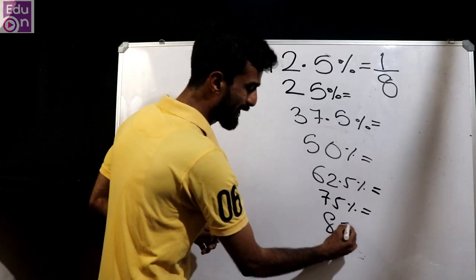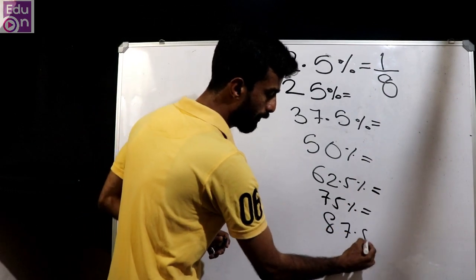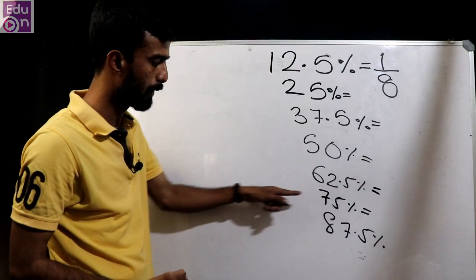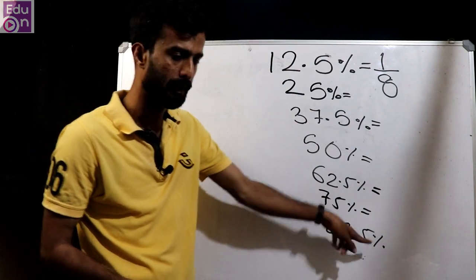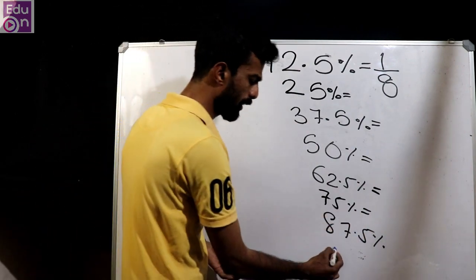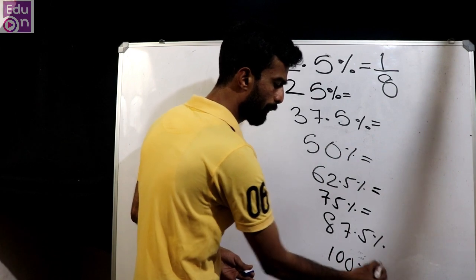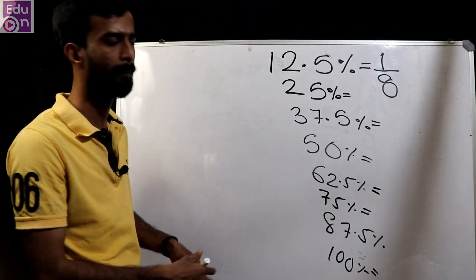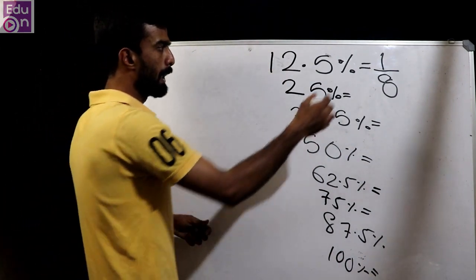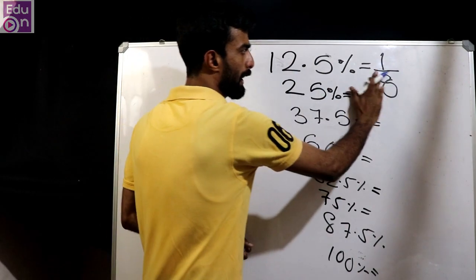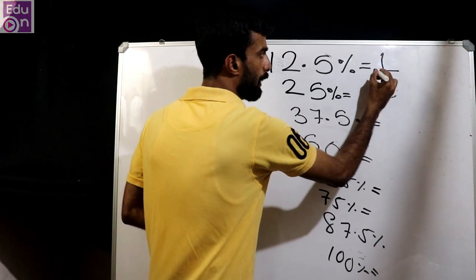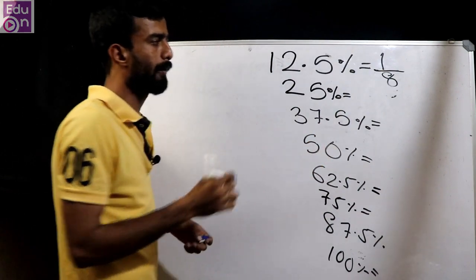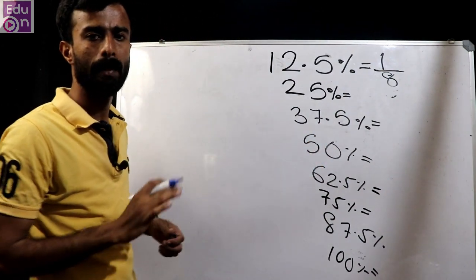The value of 87.5 percentage is 100 percentage. We will complete the chart. 1 by 8: 1/8 is 12.5 percentage.